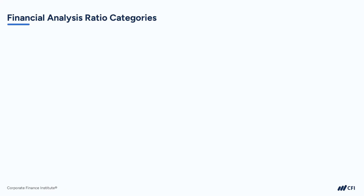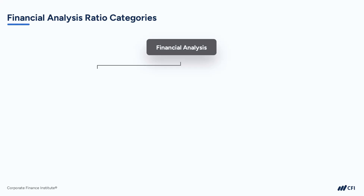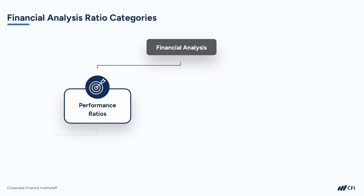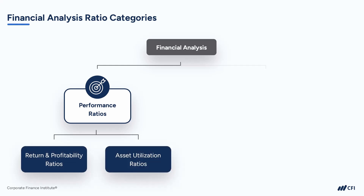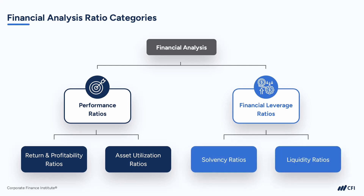We are going to break our ratios into two large categories and four subcategories. First, we have performance ratios, which speak to how a company is doing, what returns and profitability it is delivering to stakeholders, and how efficiently it's making use of its assets. Financial leverage ratios, in contrast, look at both solvency and liquidity. Solvency ratios focus on a company's long-term financial health and its ability to meet long-term obligations, while liquidity ratios assess the company's short-term cash position and its ability to handle immediate financial needs.